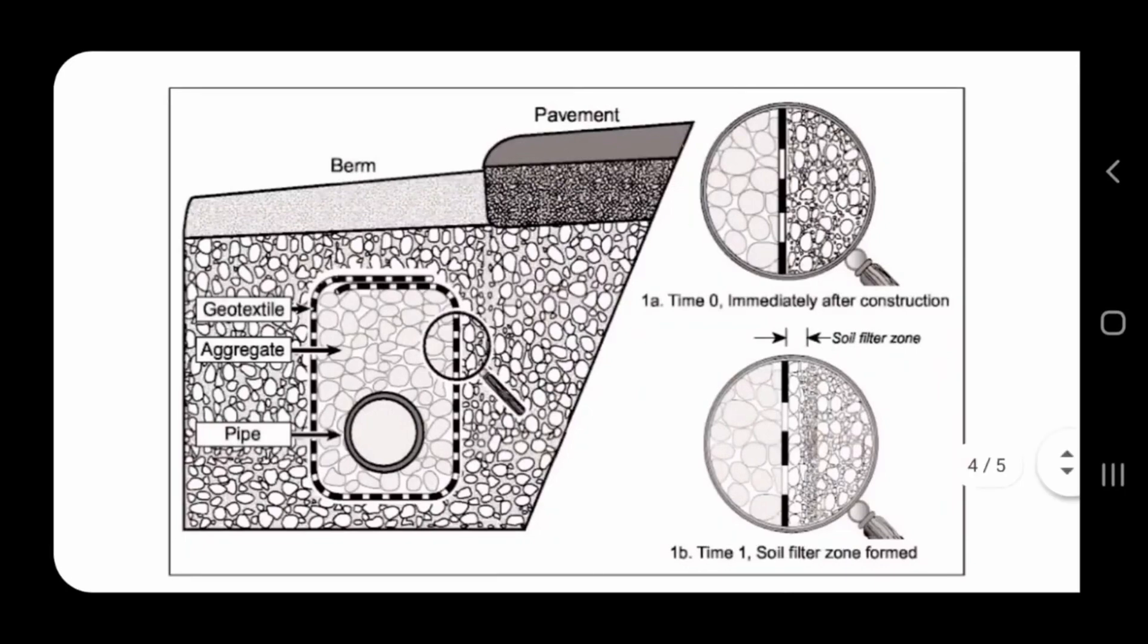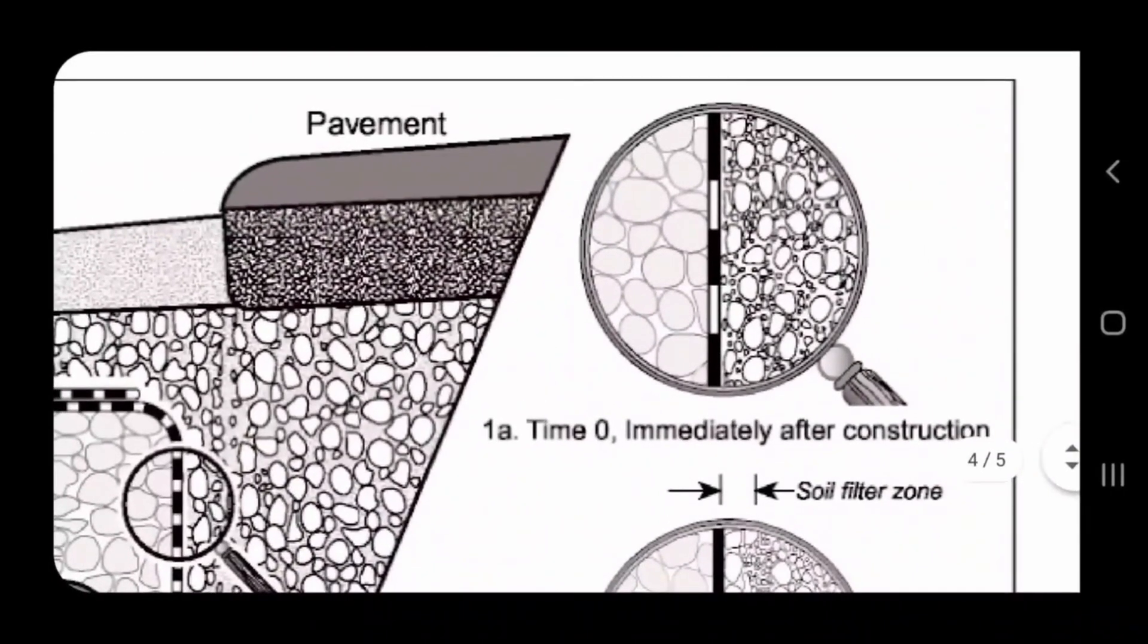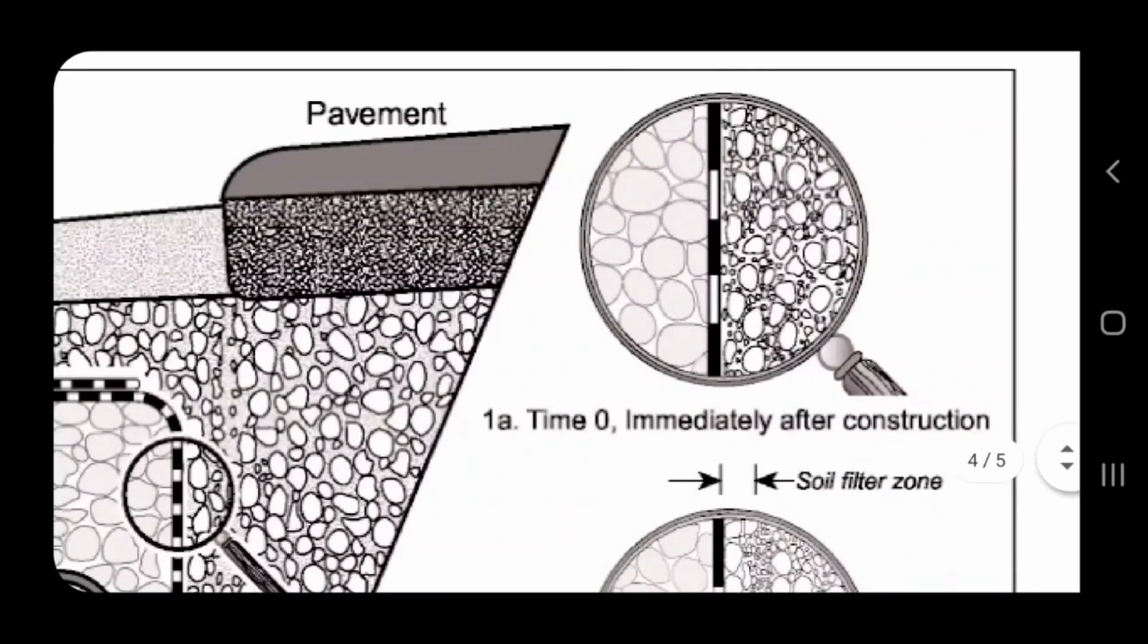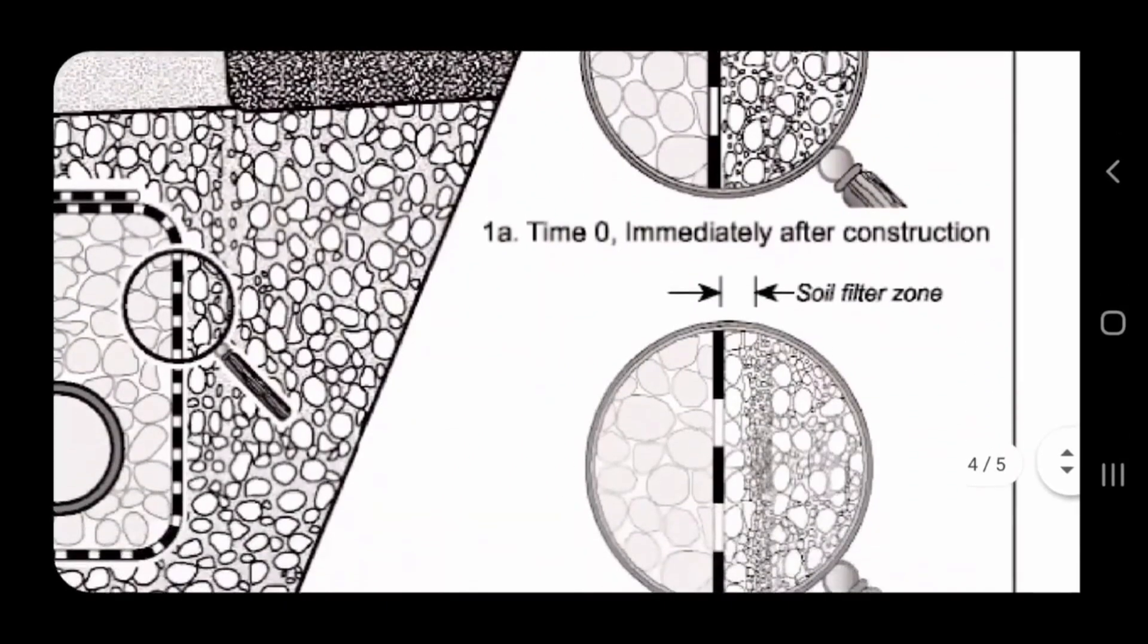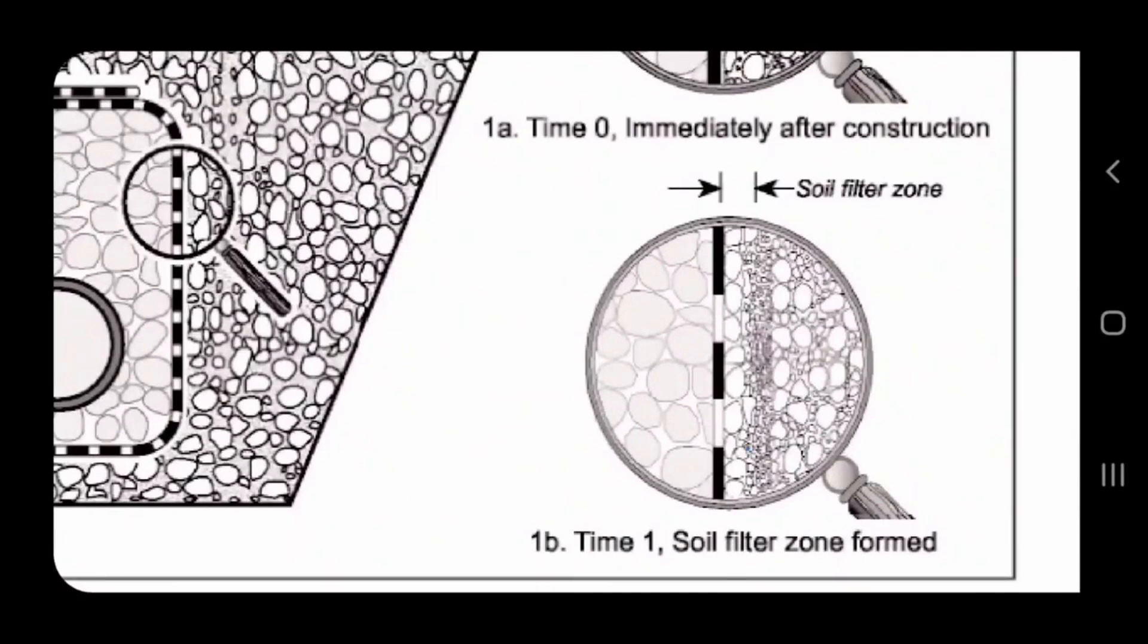The reason why our fabric works so well is because it's double punched, and the longer you have your system in, the better the soil filter zone that's formed becomes. This is how this works. So immediately after construction it's not going to work its best. You got to get all that sediment to wash through it. As time goes on and it's washing sediment through that non-woven geotextile fabric that's double punched, you are going to create the soil filter zone. When that forms, you are going to get some out of this world performance that you just can't even believe.